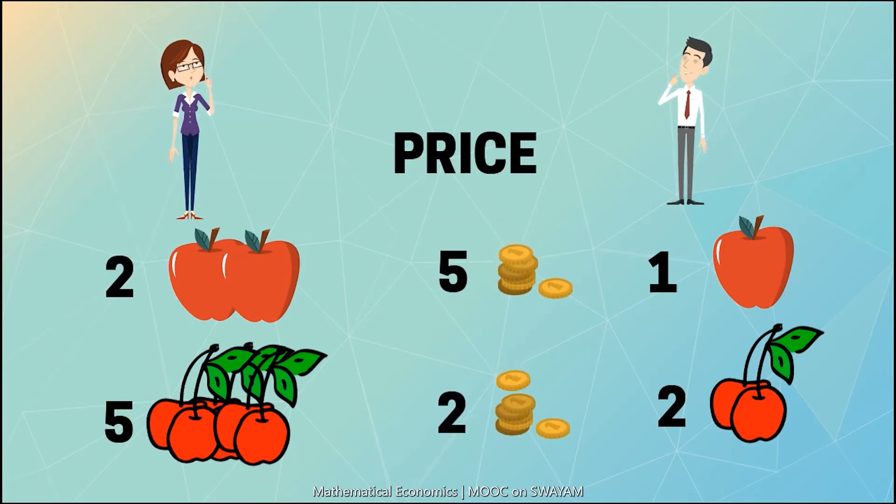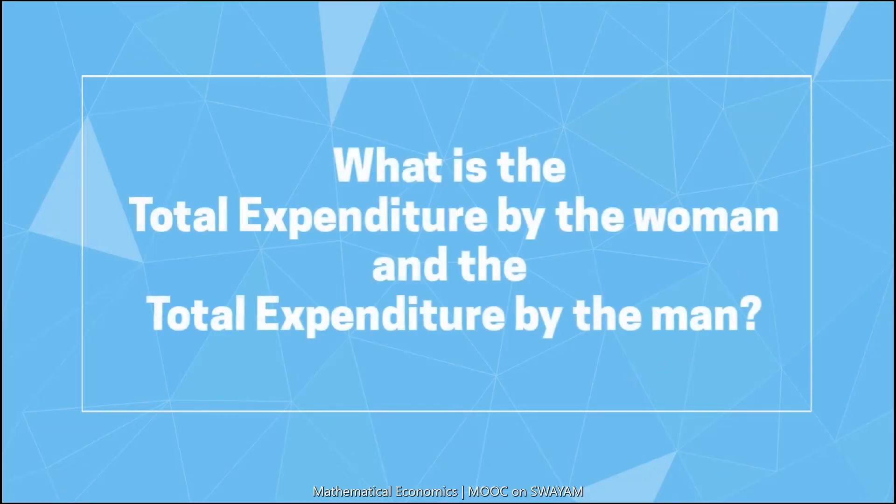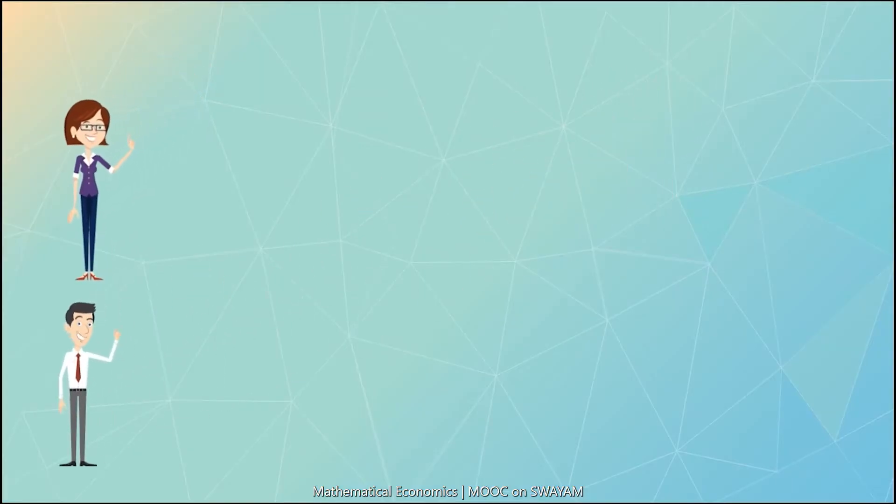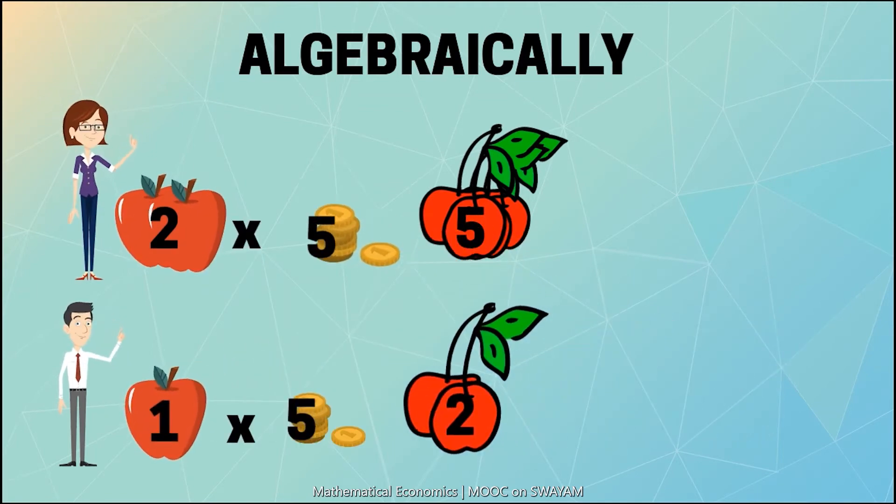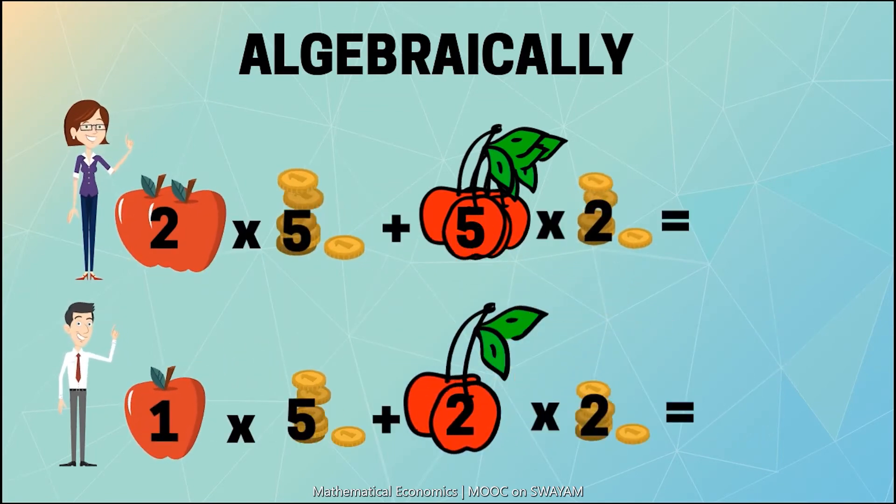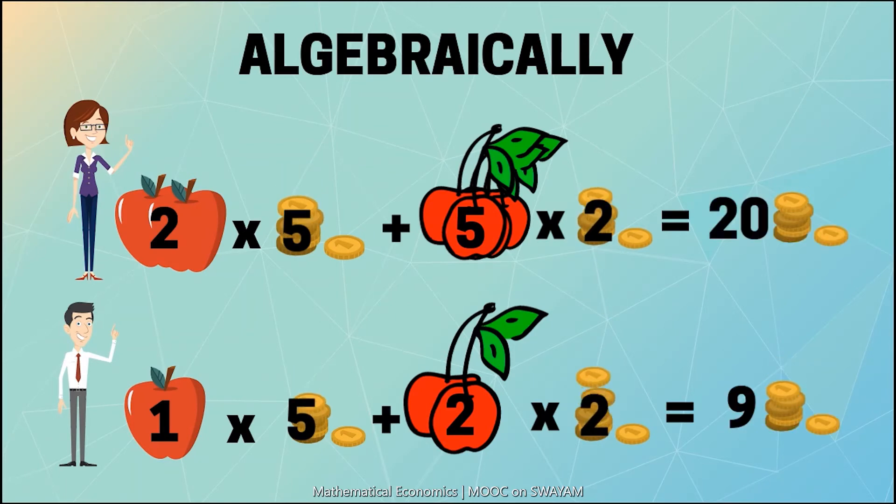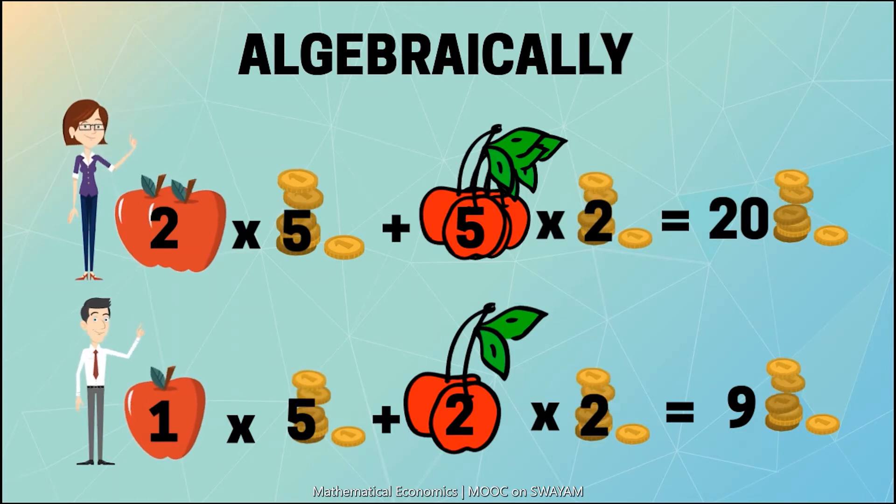What is the total expenditure by the woman and the total expenditure by the man? Algebraically, total expenditure may be found out as follows. Total expenditure by the woman is rupees 20, and total expenditure by the man is rupees 9.